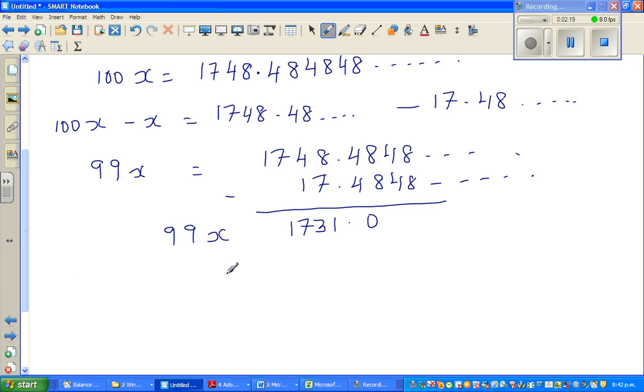Okay. So I can divide both sides by 99. If you divide this side by 99, you can also divide this or you have to divide this side by 99. I forgot the equal to sign. This is equal. So this is X is equal to 1731, 1731 divided by 99.